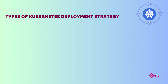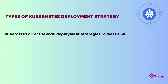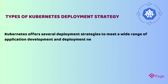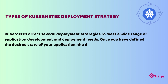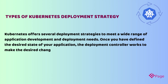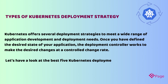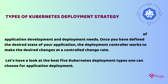Types of Kubernetes deployment strategy: Kubernetes offers several deployment strategies to meet a wide range of application development and deployment needs. Once you have defined the desired state of your application, the deployment controller works to make the desired changes at a controlled change rate. Let's have a look at the best five Kubernetes deployment types one can choose for application deployment.